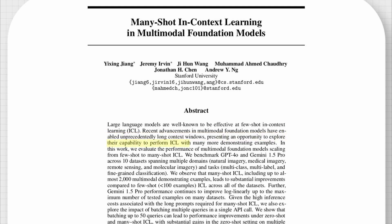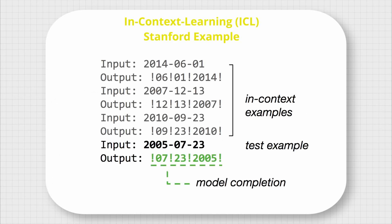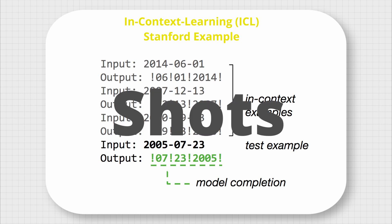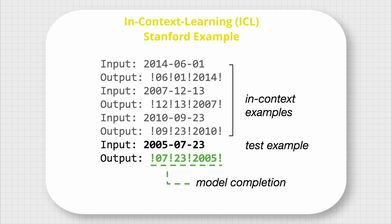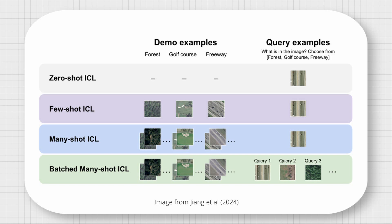If you are new to this concept, in-context learning is providing the LLM with some contextual examples — also called shots — before testing the model on the actual question or query. Here's a demonstration of the concept by way of providing in-context images, whereby the model has to decide whether an image on the right is a forest, golf course, or freeway.